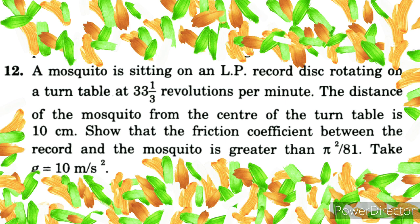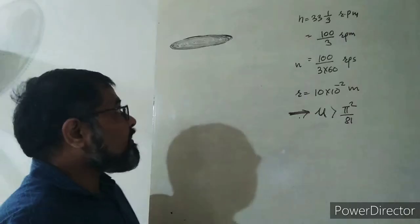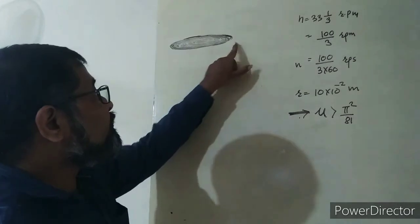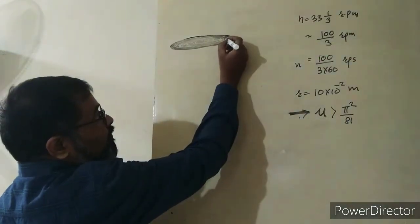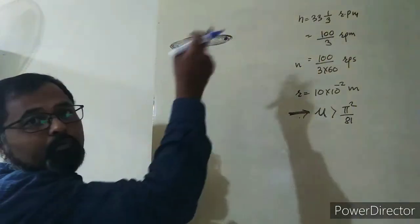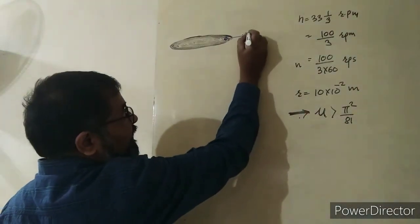So you have a disc and a mosquito. When the disc rotates, the mosquito experiences a force in the outward direction: mr ω² or mv²/r.